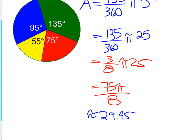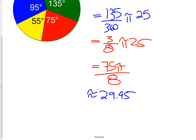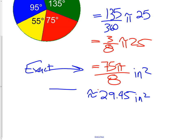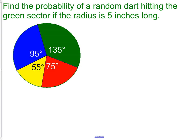We were measuring in inches, so the units are inches squared. The first answer — 75 pi over 8 — is called our exact answer. The second — 29.45 — is an approximate. It all depends on what the question is asking: if it asks for an approximate, round; if it asks for the exact, leave pi in your answer.